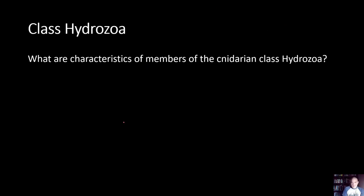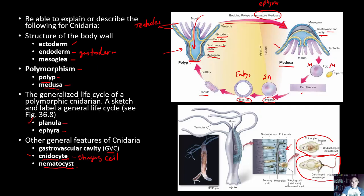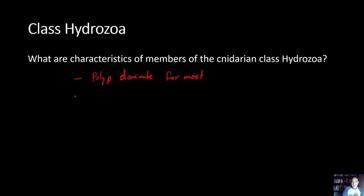The first class to look at is Hydrozoa. A key characteristic is that the polyp stage dominates for most hydrozoans. They typically have a medusa stage that is somewhat reduced, but some hydrozoans have lost the medusa stage entirely from their life cycle, in which case the polyp must perform sexual reproduction.